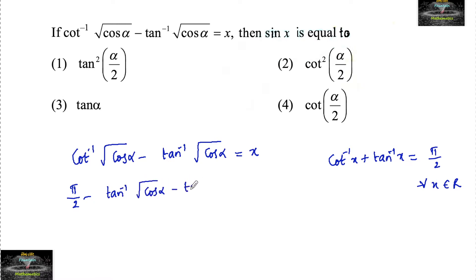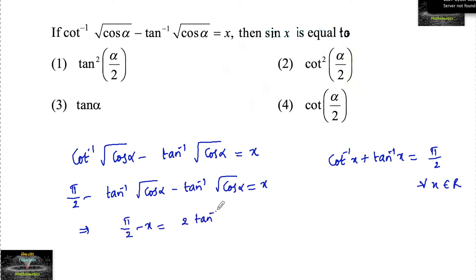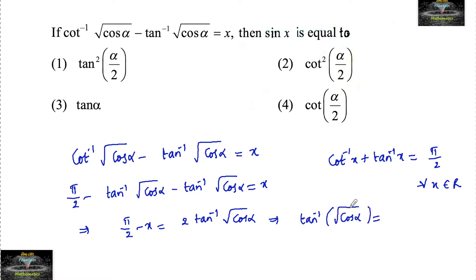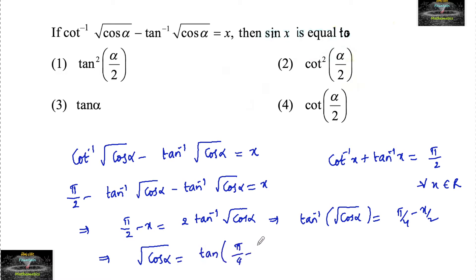So π/2 minus tan⁻¹(√cos α) minus tan⁻¹(√cos α) equals x, which gives π/2 minus x equals 2·tan⁻¹(√cos α). Therefore tan⁻¹(√cos α) equals π/4 minus x/2, so √cos α equals tan(π/4 minus x/2).